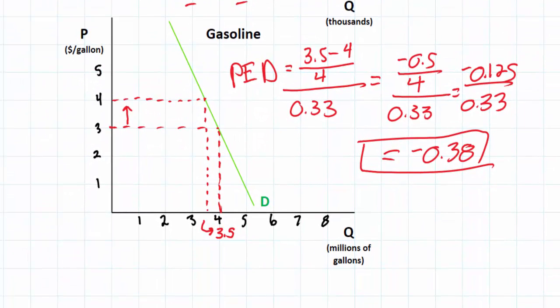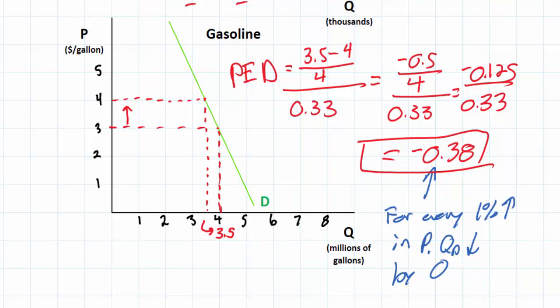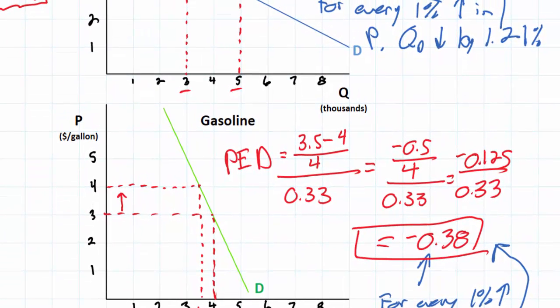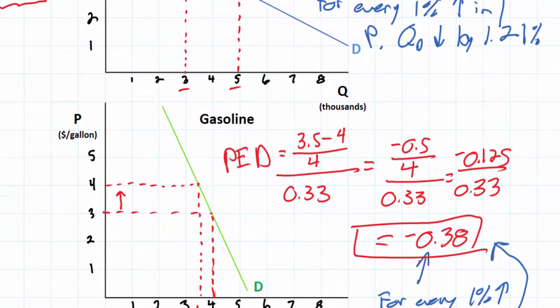And down here the interpretation of our PED for gasoline is that for every 1% increase in price, quantity demanded decreases by 0.38%. That's what PED tells us. It's the percentage decrease in quantity resulting from every 1% increase in the price.